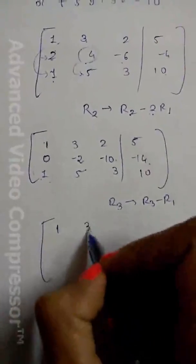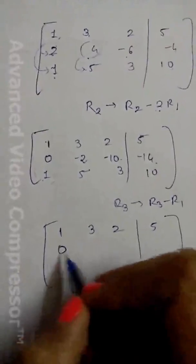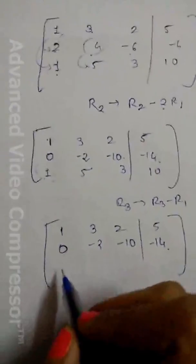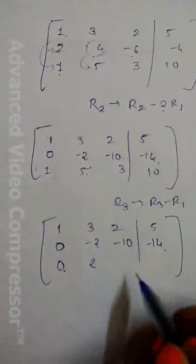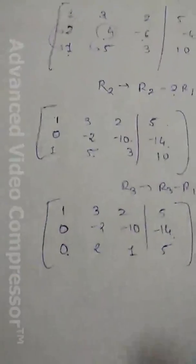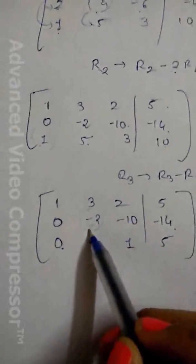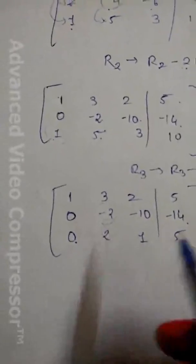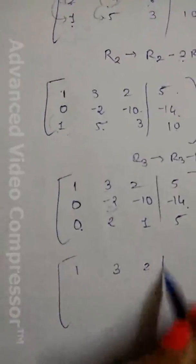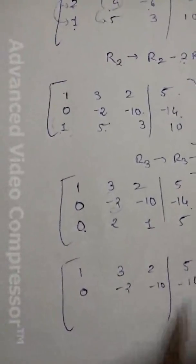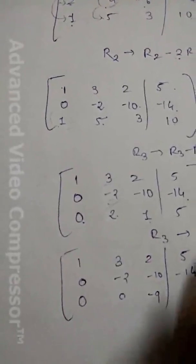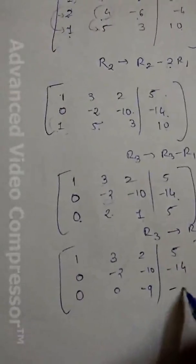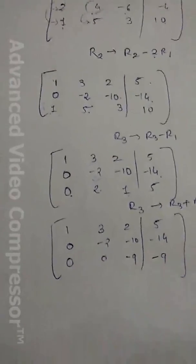For R3 we apply R3 → R3 − R1: 5−3 = 2, 3−2 = 1, 10−5 = 5, giving row 3 as [0, 2, 1 | 5]. Now using the second-row pivot we apply R3 → R3 + R2 to make the second element of row 3 zero. The result is [0, 0, −9 | −9]. This is our upper triangular matrix.